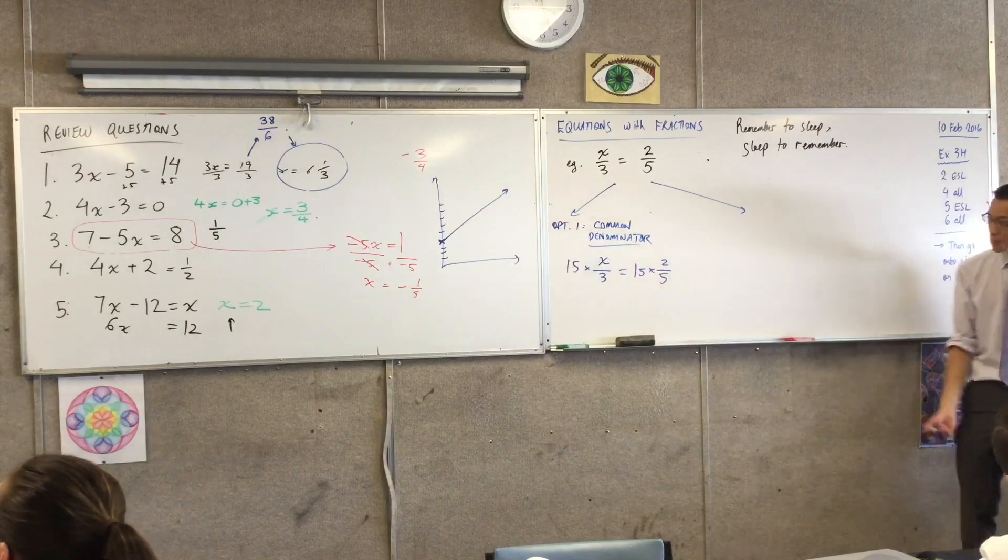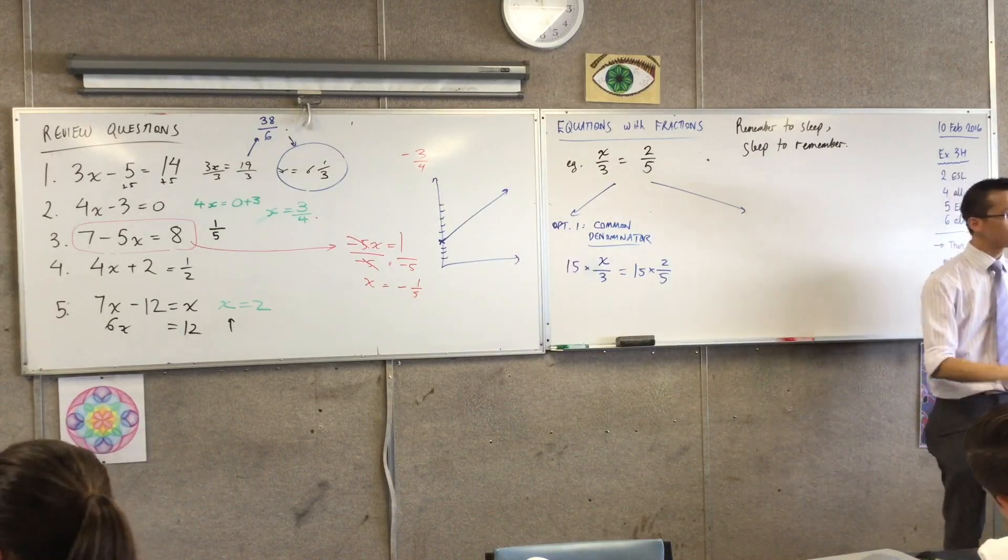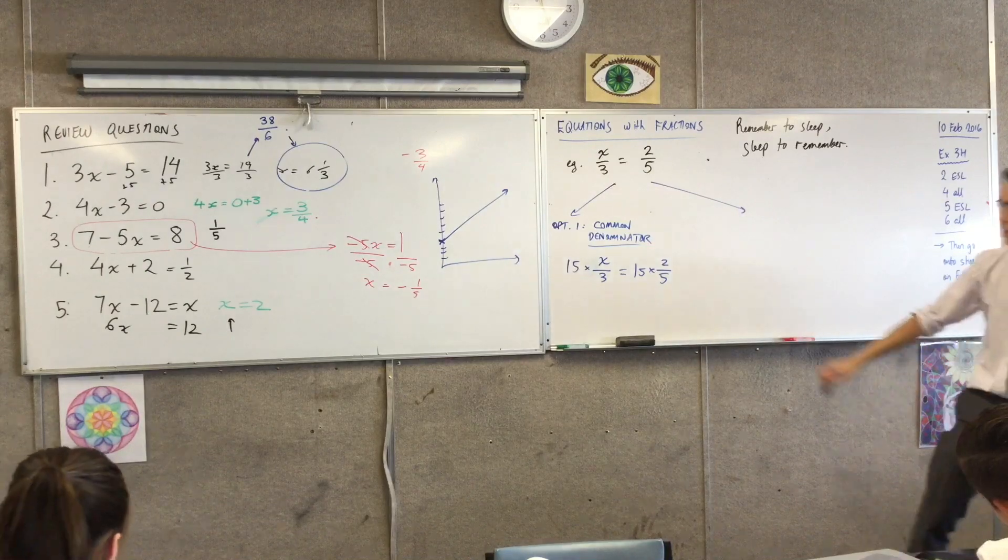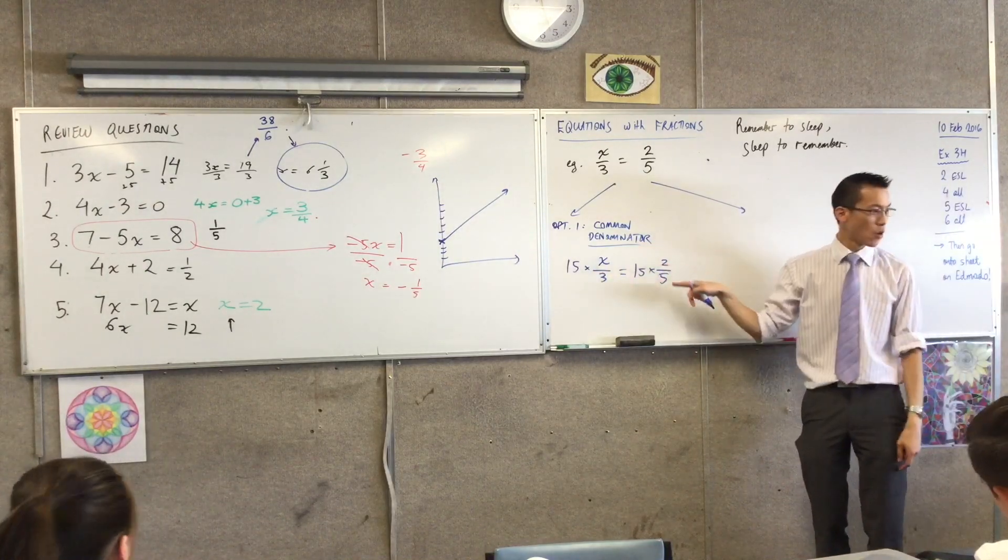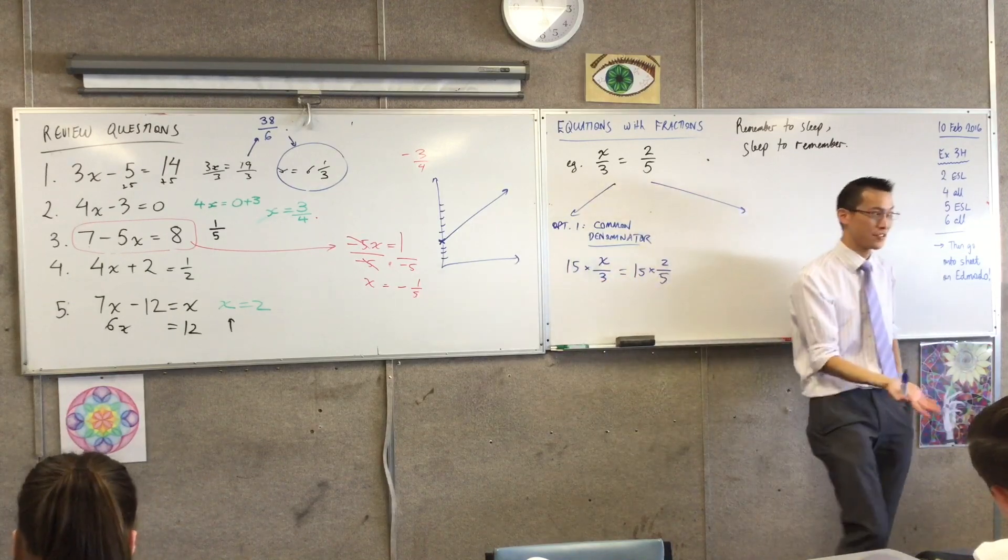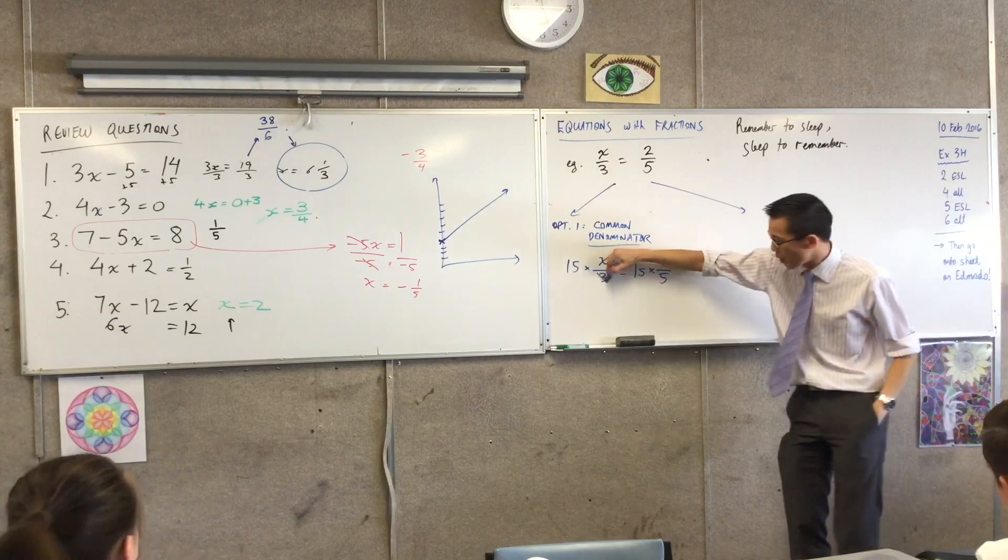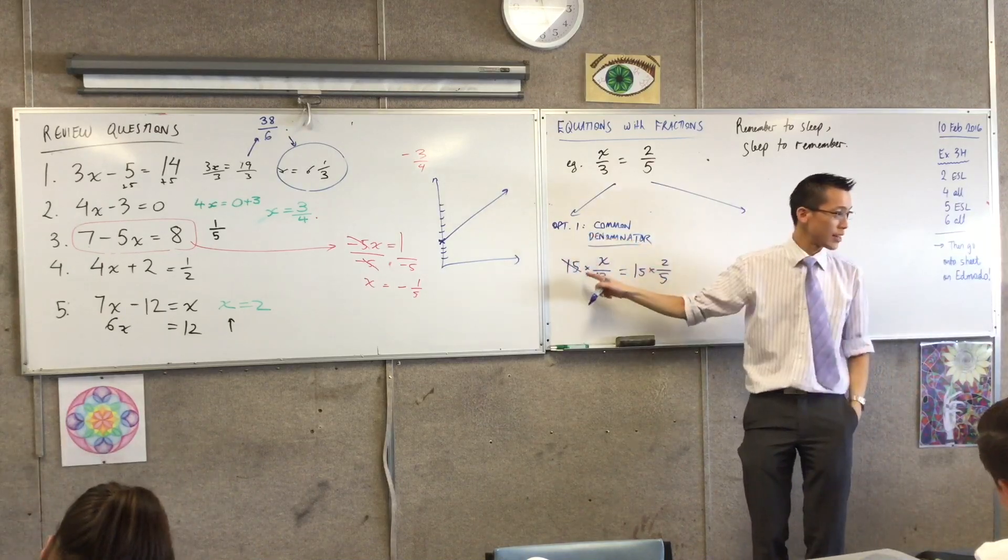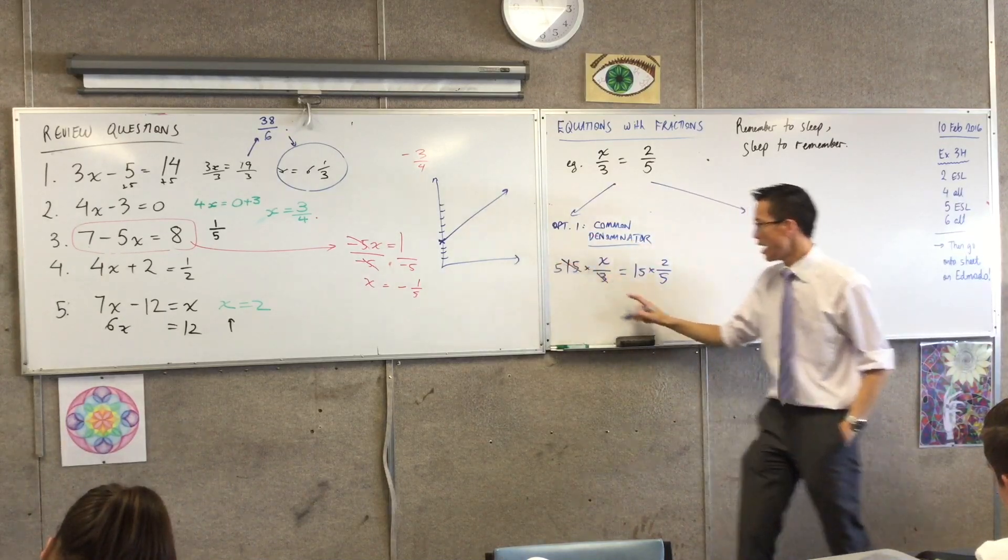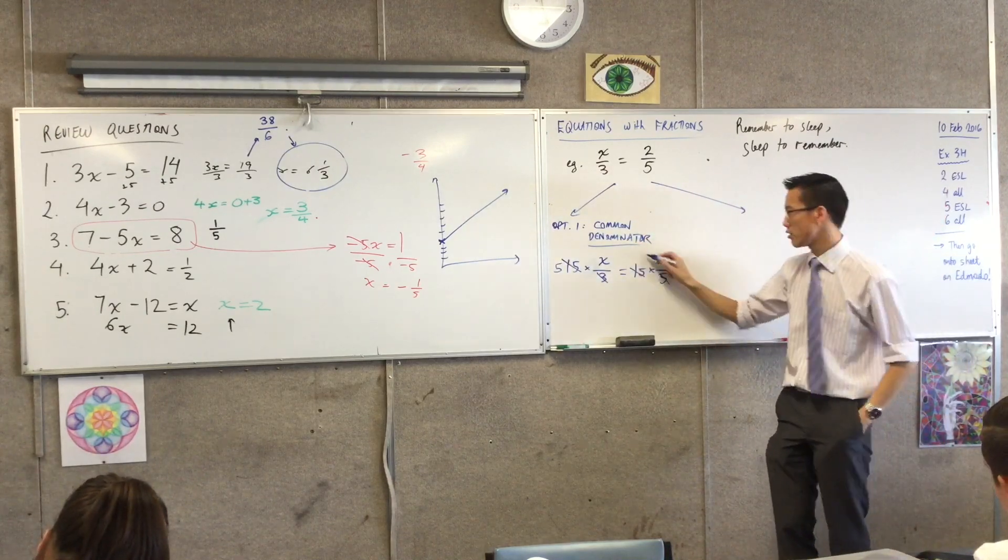For example, left-hand side—the three will go, that one will go. What do I get left with? Five. Good. And then over here I can cancel the five. What do I get left with? Three. Good.